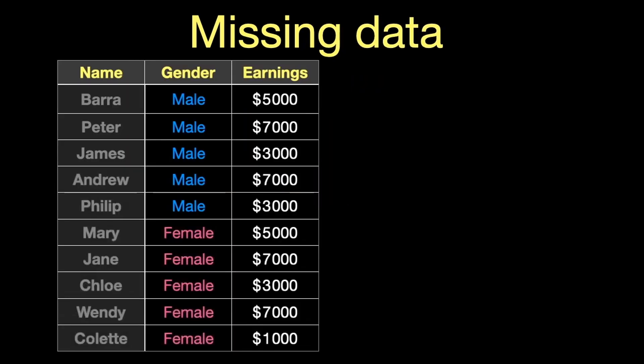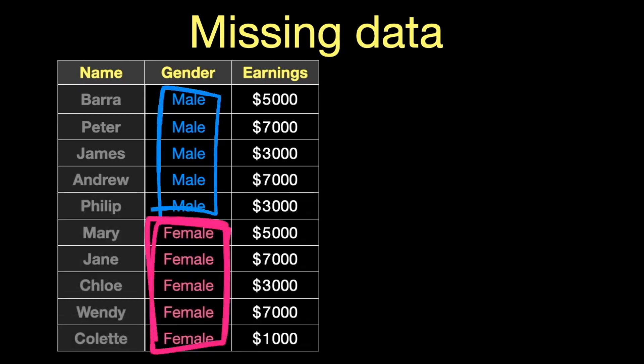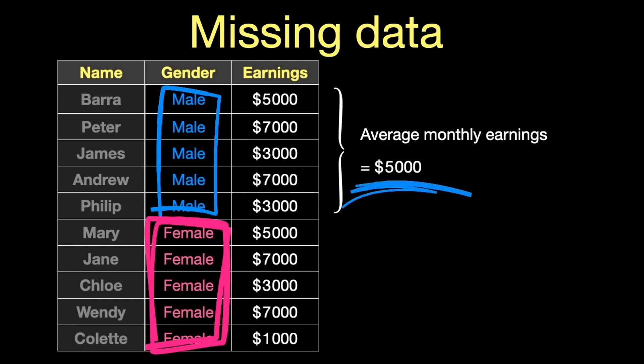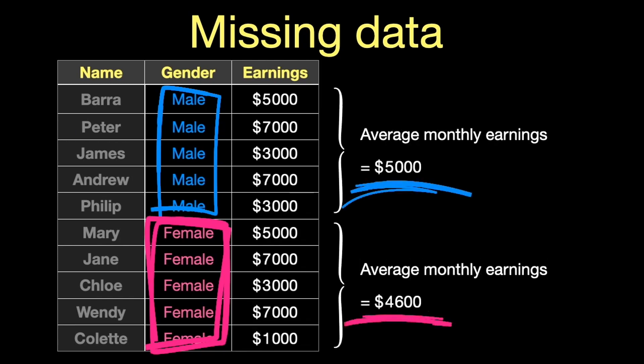I want to illustrate the importance of understanding the distribution of missing data, and to do this we're going to look at a very simple data set. We're going to imagine we're interested in the difference in the average earnings of men and women — all of these figures are completely fictitious. In this data set there are no missing values, and we can see that men's average earning is about $5,000 a month and women's is about $4,600, a little less.